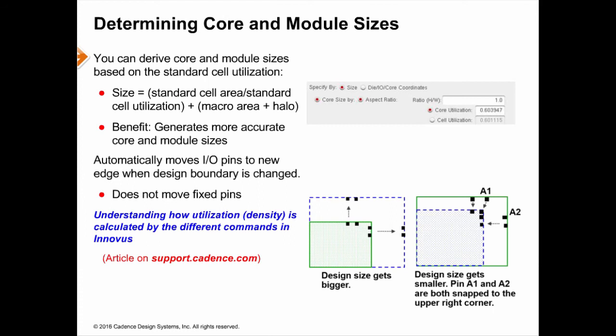You can derive core and module sizes based on either the standard cell utilization or both the standard cell utilization as well as the macro utilization. In order to learn more about how utilization is calculated, go to this solution on support.cadence.com.